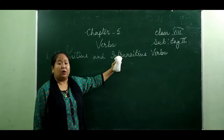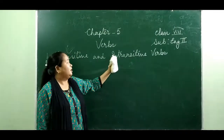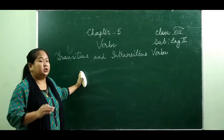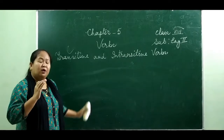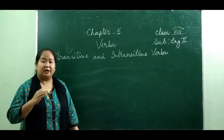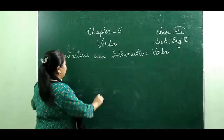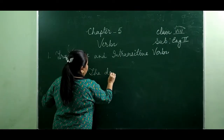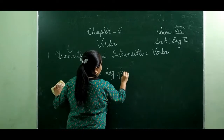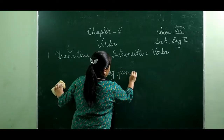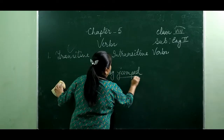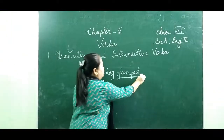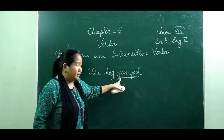Intransitive verbs. What are intransitive verbs? An intransitive verb is a verb which does not require any object to complete its meaning. For example, 'the dog jumps.' Here the verb 'jump' — it completes its meaning.